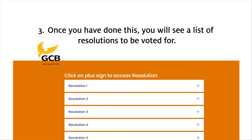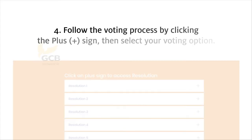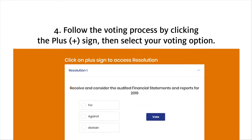Once you have done this, you will see a list of resolutions to be voted for. Follow the voting process by clicking the plus sign, then select your voting option.